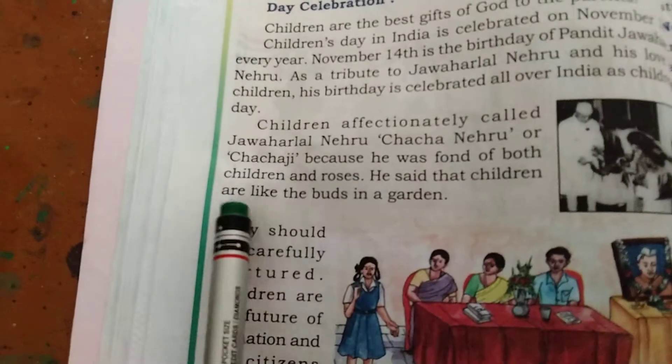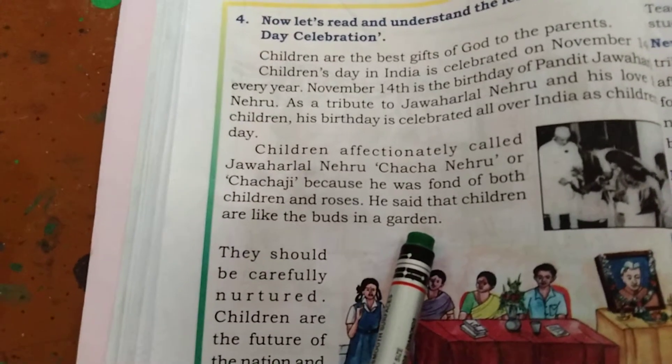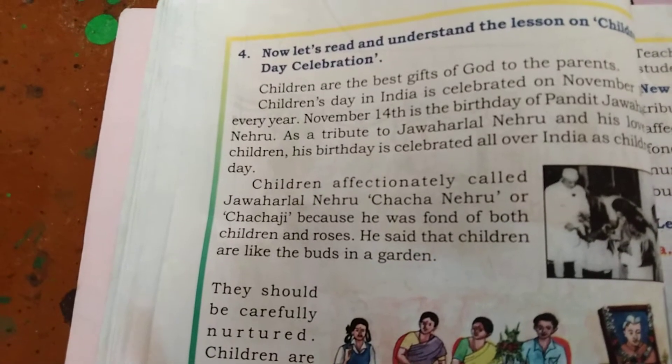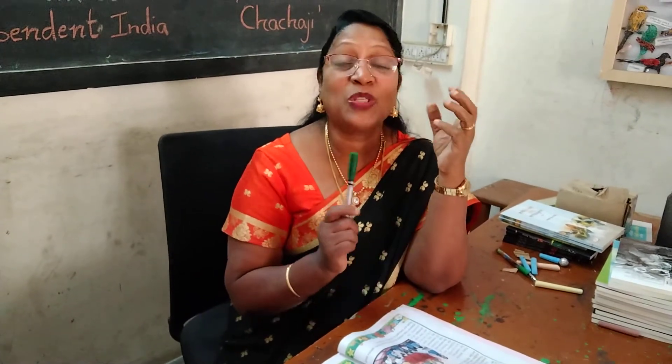Children affectionately called Jawaharlal Nehru Cha Cha Nehru or Cha Cha Ji because he was fond of both children and roses. He said that children are like the buds in a garden. Just imagine — Pandit Jawaharlal Nehru is comparing a child to a rose. A rose is such a delicate flower, so beautiful. If we get a rose, we carry it so carefully and keep it so well. When the bud blooms, it looks so beautiful and gives such a wonderful scent and aroma.